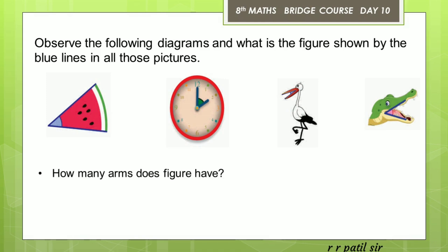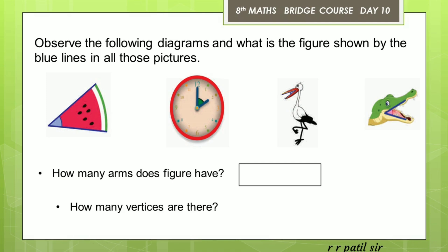Let us see the first question: how many arms does each figure have? In every figure there are arms or blue lines. How many arms are there? The second question is: how many vertices are there? If you have two rays forming a figure, then there are two arms — so the answer is 2. And how many vertices does that figure have? That is the answer you will find.